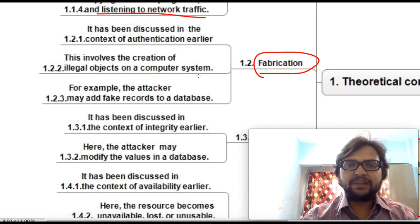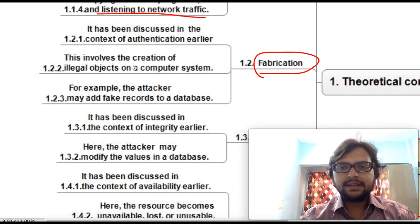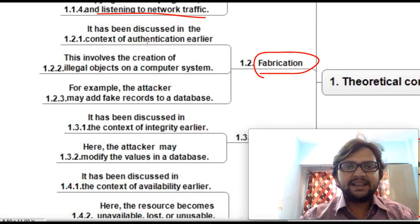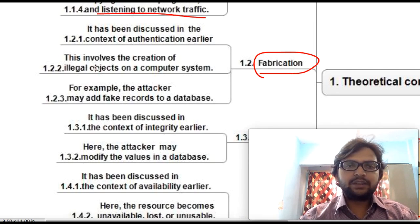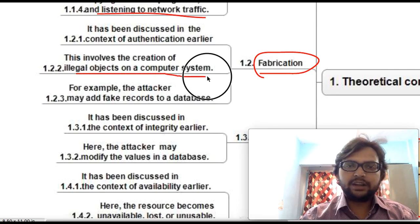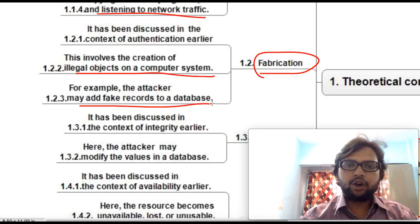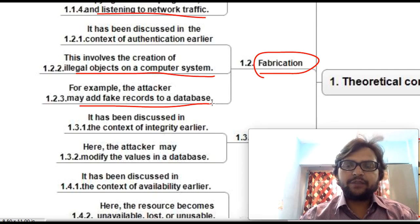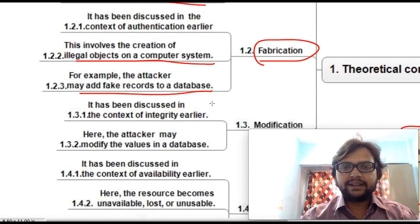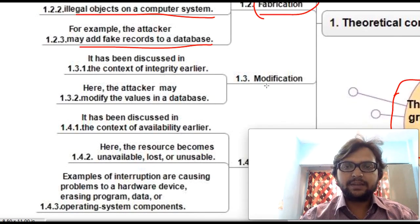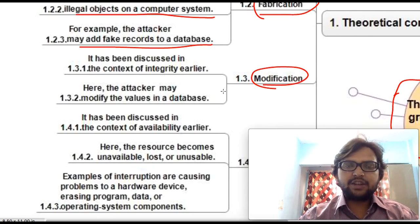Next is fabrication, discussed in the context of authentication. This involves creation of an illegal object or use of a computer system. For example, an attacker may add fake records to a database — that is what we mean by fabrication: adding or modifying data in a database.